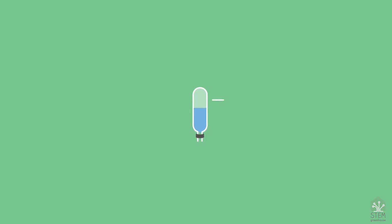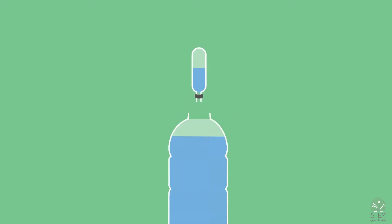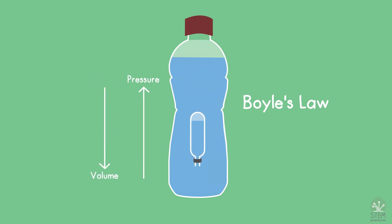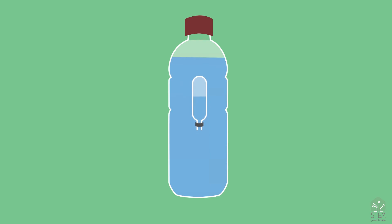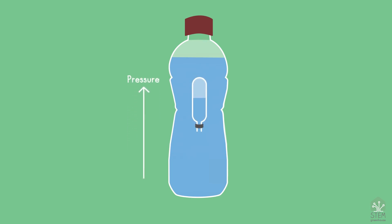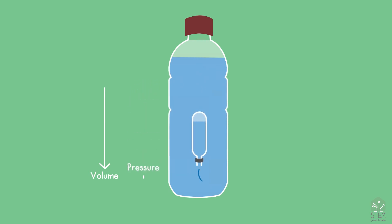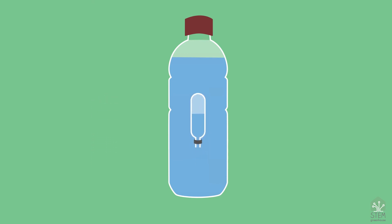That can be explained with Boyle's Law. The Cartesian diver is partially filled with air particles and partially filled with water particles. When we squeeze the bottle, the pressure inside the bottle increases. Boyle's Law states that when the pressure on a gas is increased, the gas compresses into a smaller volume. Air particles can be compressed, but liquids and solids cannot. So when we squeeze the bottle, water enters the diver's opening and the air inside it is compressed. With more water inside, the density of the Cartesian diver increases and it starts to sink. When we release the bottle and the pressure decreases, the air expands back to its original volume and the density of the Cartesian diver decreases and it starts to float again.